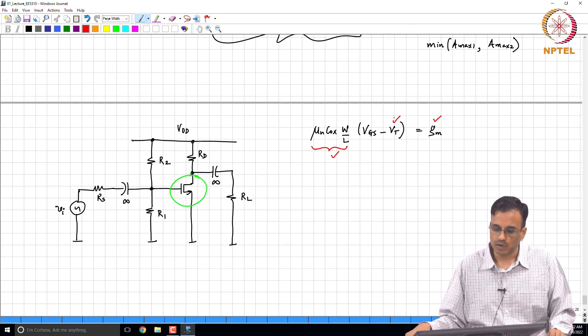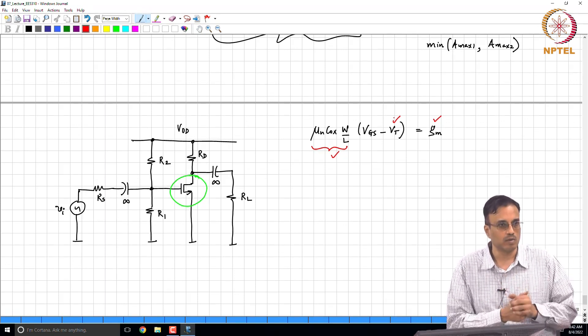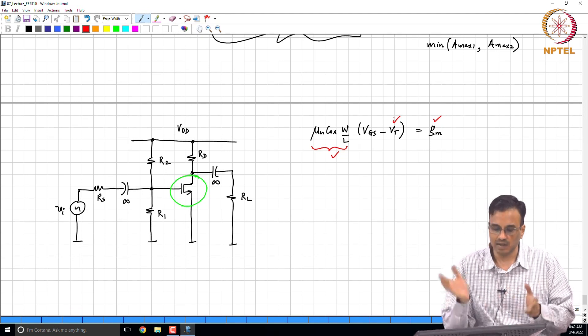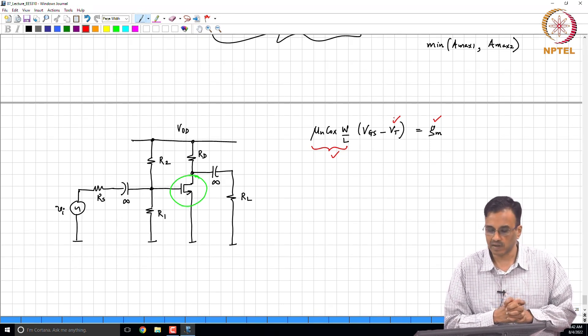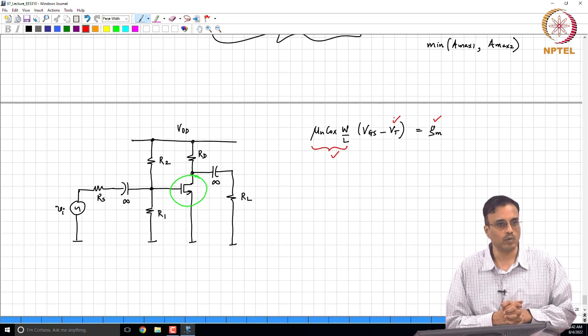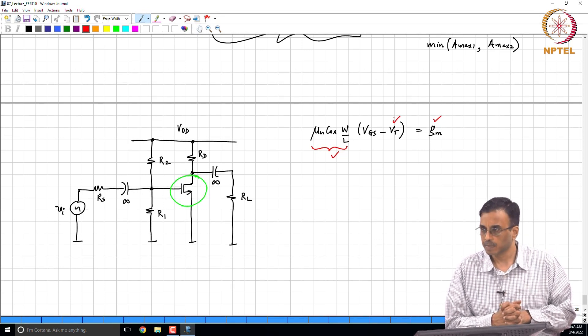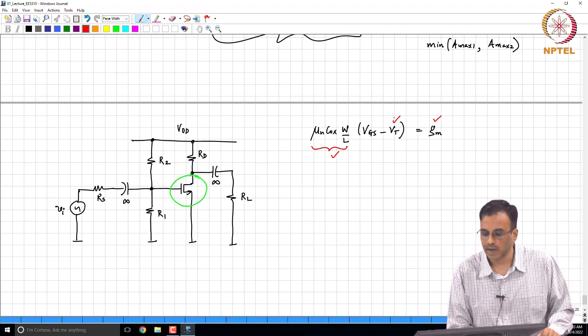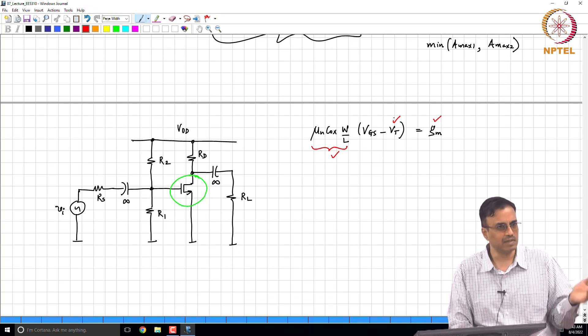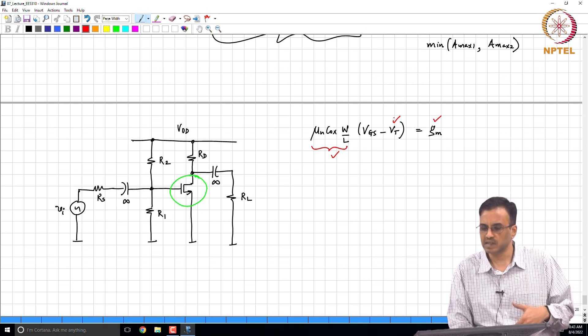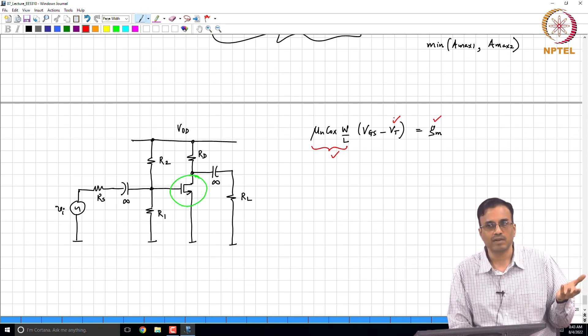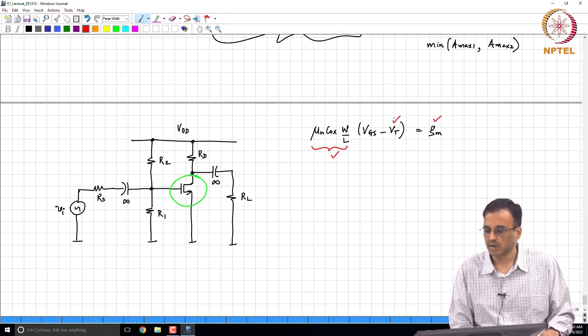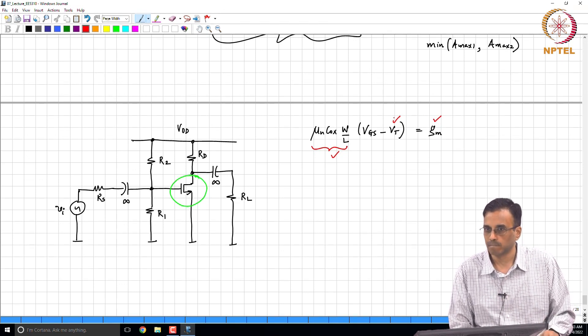That is the design process. So let's say we want to choose component values so that the gain is a certain value. We know the load resistor R_L and therefore we know what the g_m should be. If we know the g_m and you know mu_n C_ox W/L and V_T, then we can find V_GS. Once you find V_GS, we can find R1 and R2 and then you are done.